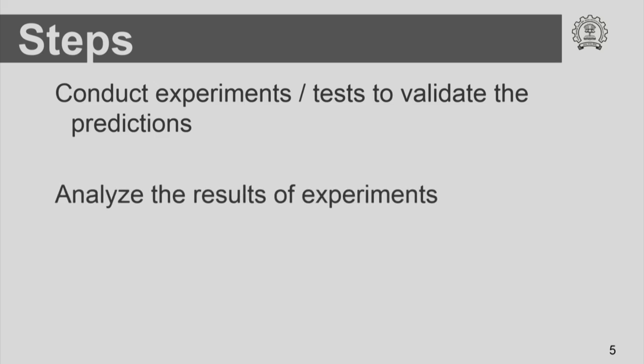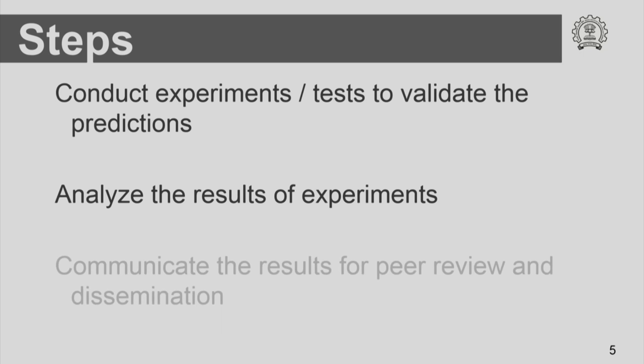Once you conduct experiments, you get data from those experiments. It could be in different forms, and then you need to analyze the data — checking whether this confirms the predictions that you have made is important. And if it does confirm, what we do is communicate these results for peer review — another very important step in the scientific method. We disseminate our results; we do not keep them to ourselves. The results that you get as part of your hypothesis, experiments, testing, and validation are communicated for peer review.